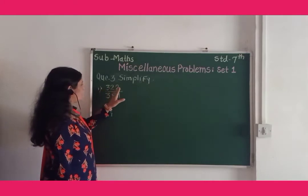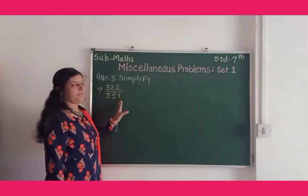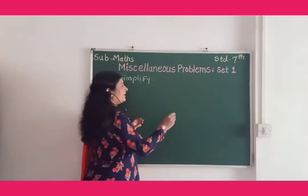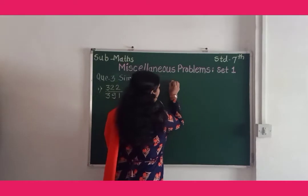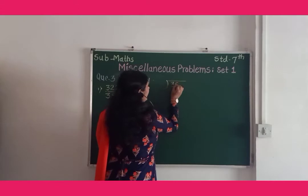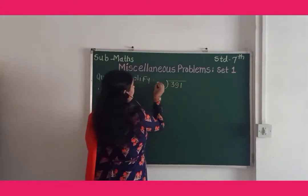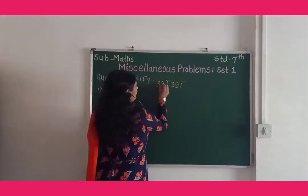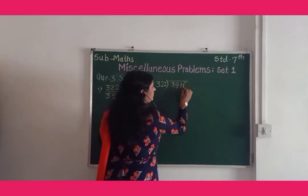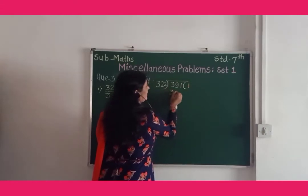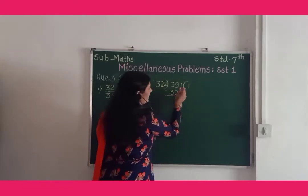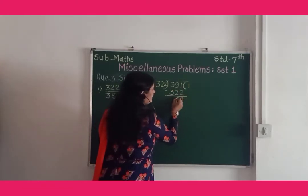Here we divide 391 by 322. We write 322 ones are 322, and here we get the remainder 69.